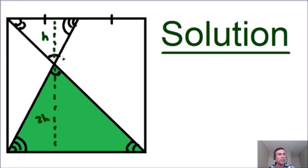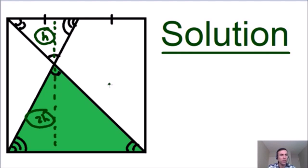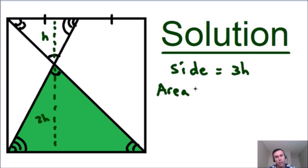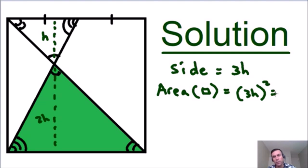Now let's see what this information tells us. We know that the entire side of the square is equal to H plus 2H, so the side of the square equals H + 2H = 3H. The area of the square is equal to the side length squared, so 3H times 3H, which is 3H squared, equals 9H squared.